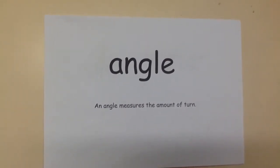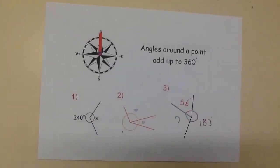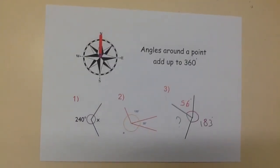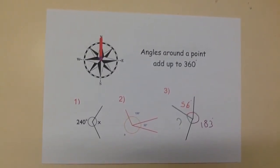Angles measure how fast something has turned. They are measured in degrees. There are 360 degrees in a full turn, often shown as a circle around a point.